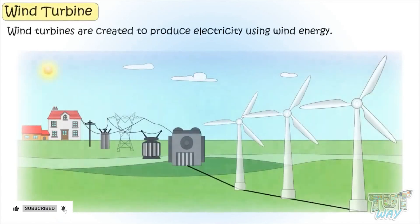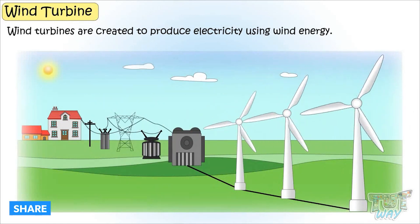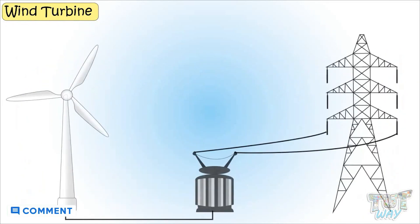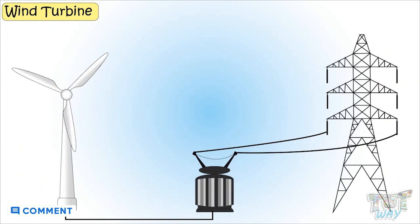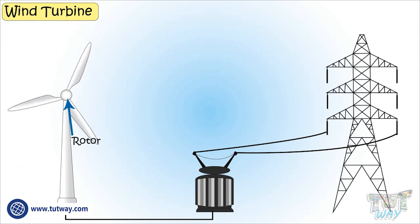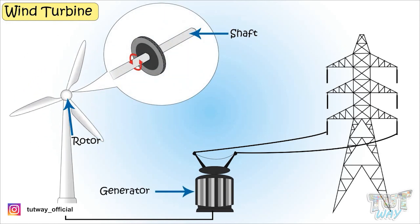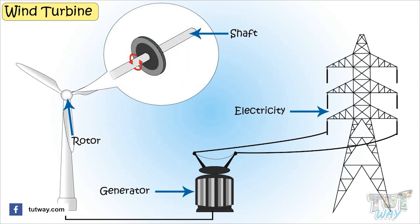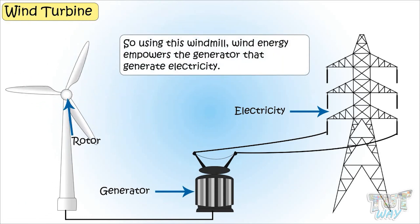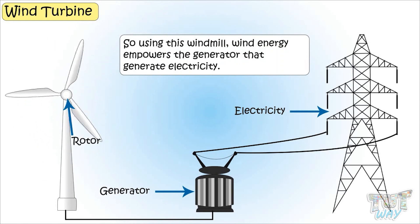Big wind turbines are created to produce electricity using wind energy. The kinetic energy of moving air turns the blades around the rotor, and this rotor is attached to the main shaft connected to a generator that generates electricity. By using windmills, wind energy powers the generator that produces electricity.